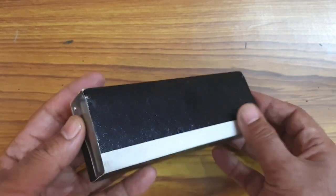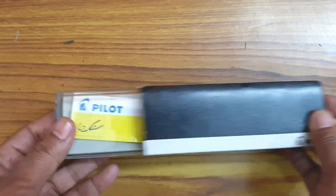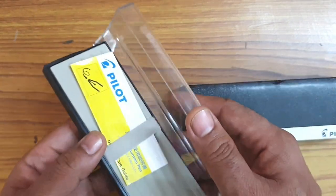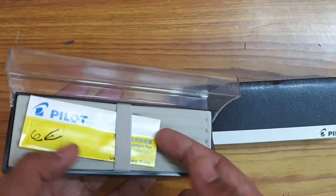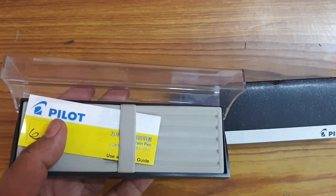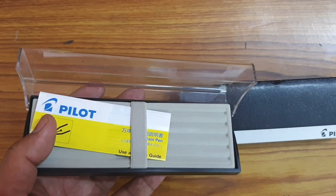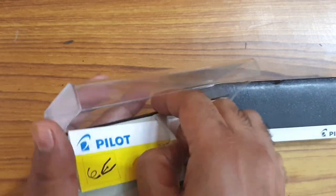This comes in a simple sleeve and you have a plastic case within it. It just opens up and it comes with a Con-40 converter and a cartridge.